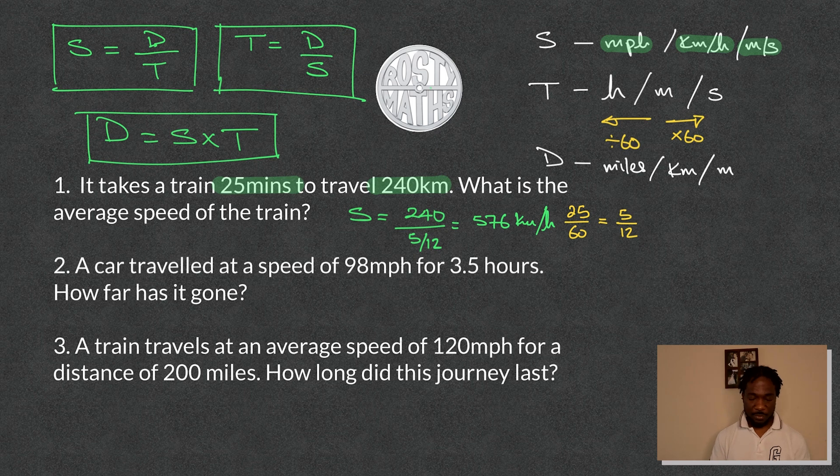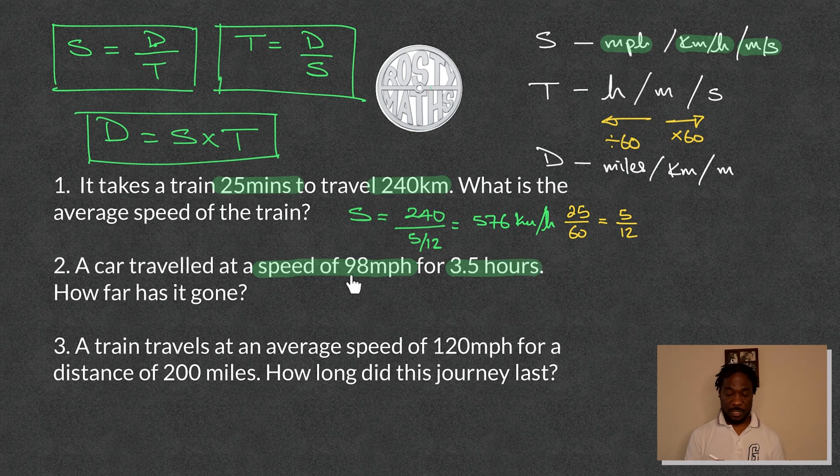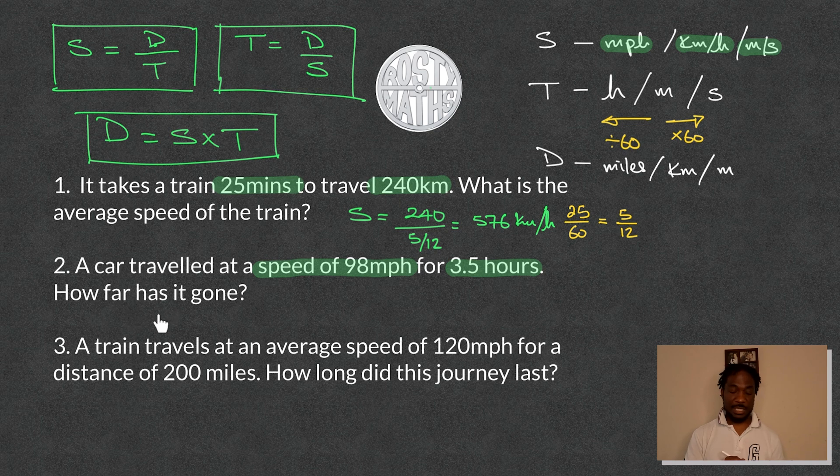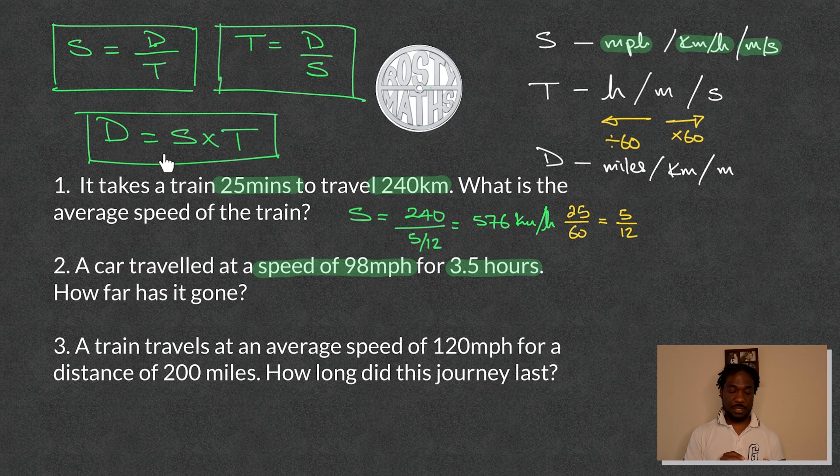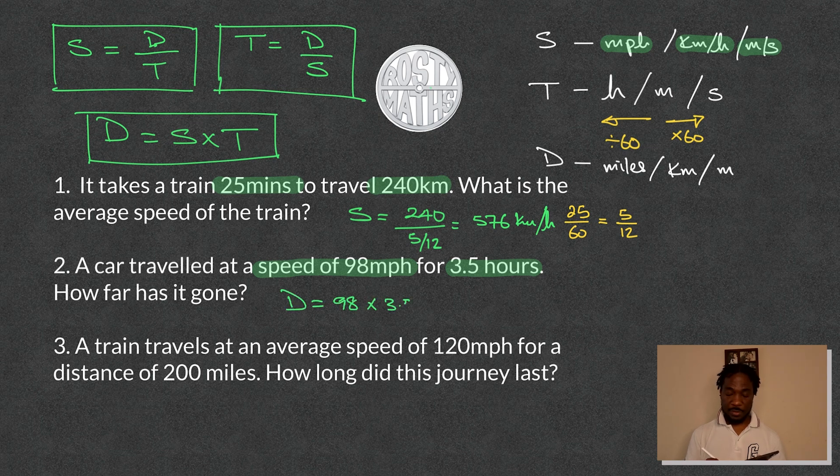Okay, let's go into question two now. What do they want in question two? So in question two, we have got a car travelled at a speed of 98 miles per hour. And it took 3.5 hours. So they've given me the speed and they've given me the time. So it makes sense that they're asking me for the distance. How far it's gone is distance. How do I find distance? Distance is speed times time. So I'm just going to say that the distance is the speed of 98 multiplied by 3.5 hours. How far has it gone?